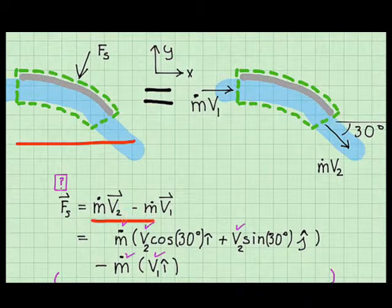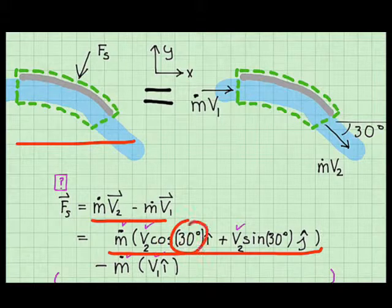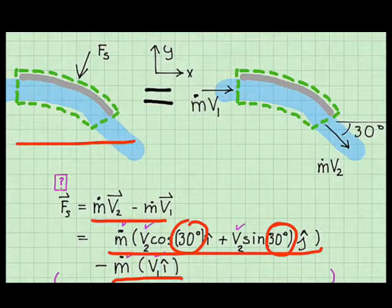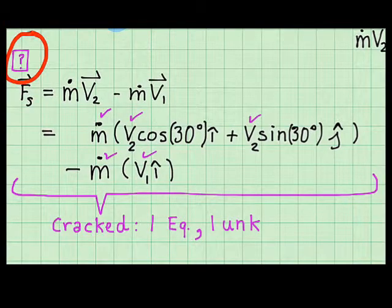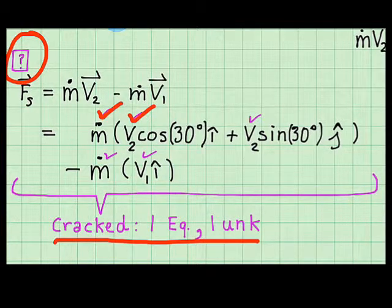Next, I expand the momentum terms using i-hat and j-hat. The momentum outflow is written in terms of the angle 30 degrees — cosine 30 and sine 30. The momentum inflow is minus m-dot v₁ i-hat. M-dot is known, v₂ is known, etc. When I count equations and unknowns, I have one vector equation and one unknown. The problem's cracked — I'm ready to solve for my goal.